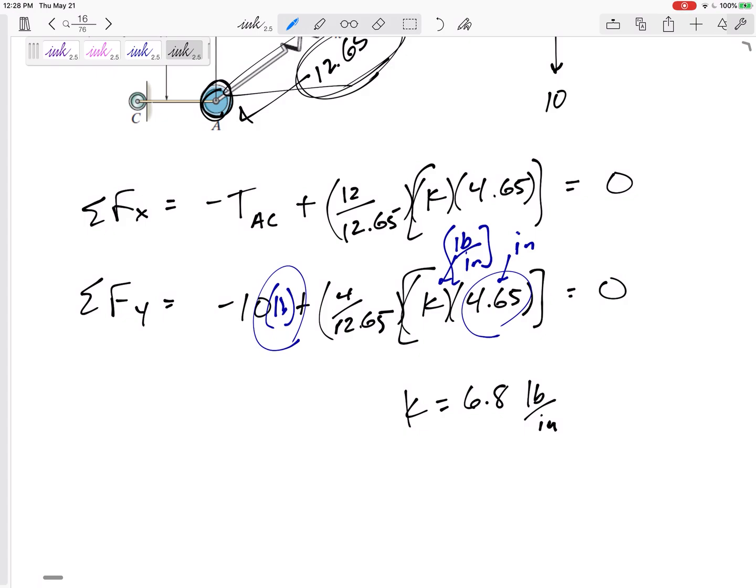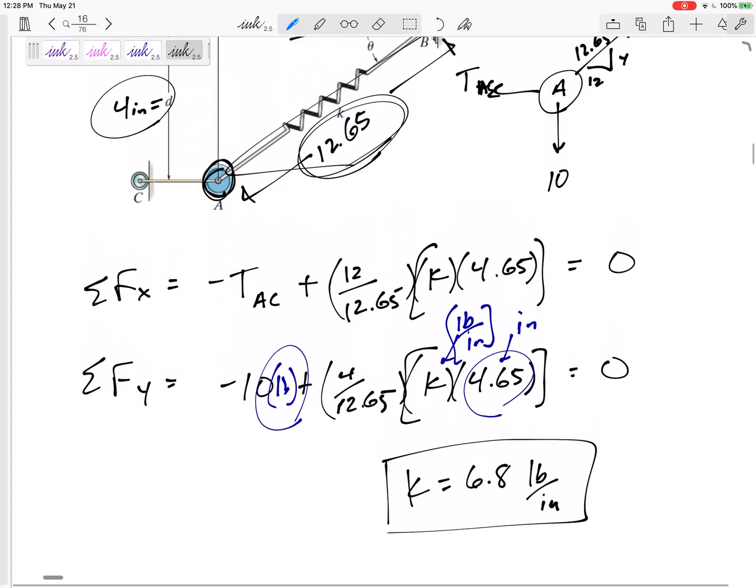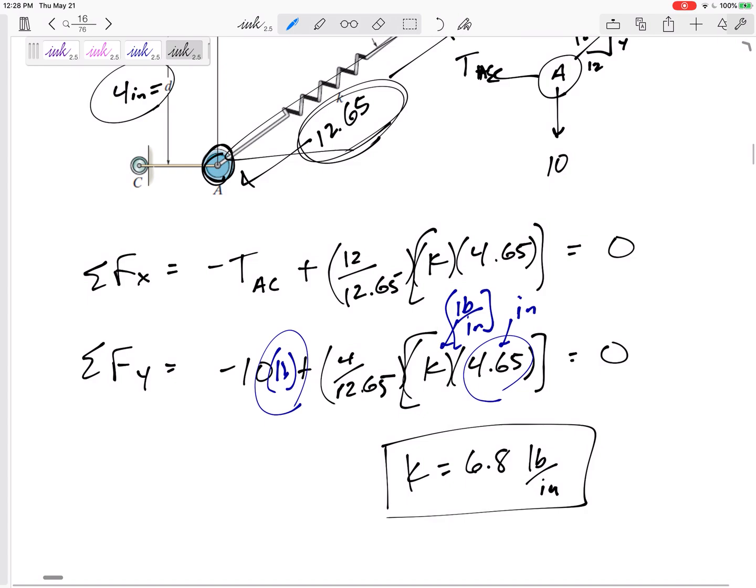So its units are going to be newtons per meter, or in this case, pounds per inch, pounds per foot. It could give any units, but it's going to be a force divided by a dimension because it's how much force keeps getting put into or by the spring for every bit of stretch or compression it has.